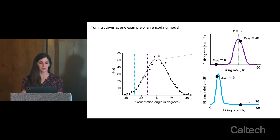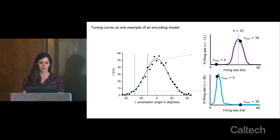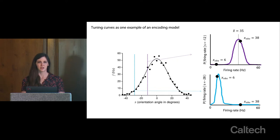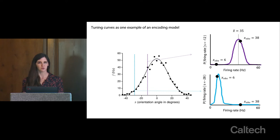Tuning curves are encoding models that give you a prediction of firing rate conditioned on the value of the sensory stimulus. If you draw a vertical slice through this tuning curve diagram, your encoding model says you have a predicted distribution of firing rates. If you present the same drifting bar multiple times, you expect an average firing rate of around 35 Hz with some variance — some trials more spikes, some fewer. The goal is to create a model that lines up predicted firing rates with what you actually see in the data.